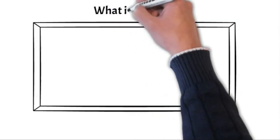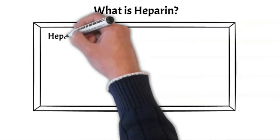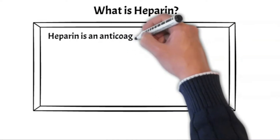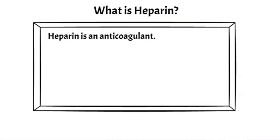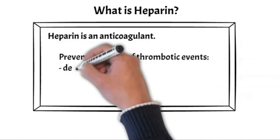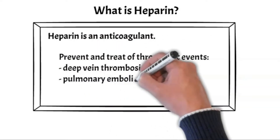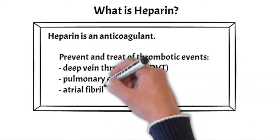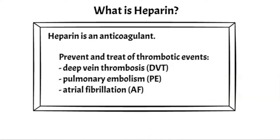Heparin is an anticoagulant. It decreases your body's clotting ability and prevents harmful clots from forming in the blood vessels. It is used to prevent and treat thrombotic events such as deep vein thrombosis, pulmonary embolism, and atrial fibrillation.